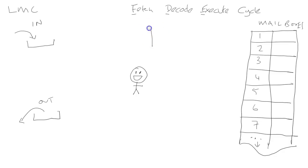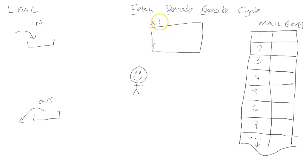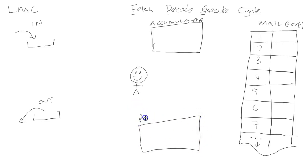There is also what we'll call a calculator — really it's the accumulator. And there is also what we call a program counter. On the program counter there is a button that adds to it, one that subtracts, and one that resets it.